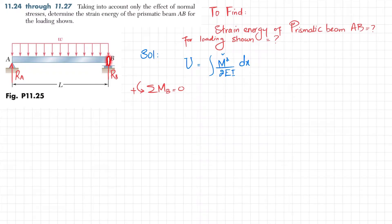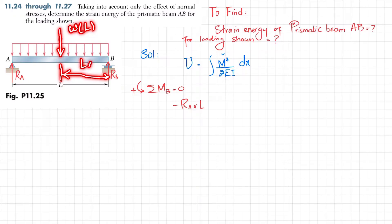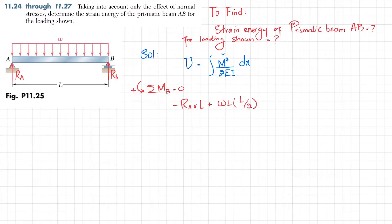Taking the sum of all moments about point B equal to zero, with counterclockwise moment as positive: the moment due to Ra with perpendicular distance L is clockwise, so it is negative: minus Ra times L. The second moment is due to the distributed load converted into concentrated load w·L acting at a distance L/2 from B, producing counterclockwise moment: plus w·L·(L/2) = 0. From here, Ra = wL/2.